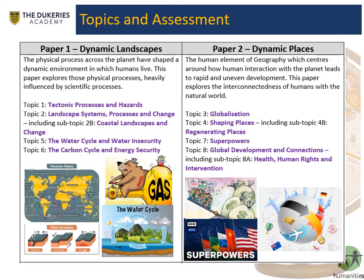In paper two, we look at globalisation — how we impact the rest of the world and how the rest of the world impacts us. Topic four covers regenerating places — how cities that have been in decline have been regenerated to become destinations for tourism or work. Topic seven is a very current topic on superpowers — starting with the Cold War between the USSR and USA and what that looks like today. Topic eight is global development and connections — looking at health, human rights, and interventions, which is especially relevant given everything that has happened with COVID. These topics are very contemporary and align with what workplaces will expect in terms of understanding the world around you.